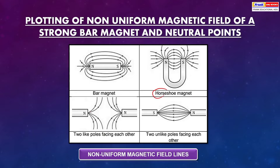In bar magnet you can see two like poles facing each other. In horseshoe magnet you can see two unlike poles facing each other. This is basically non-uniform magnetic field lines.